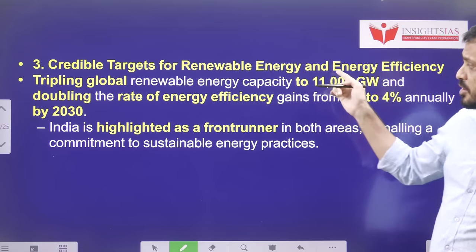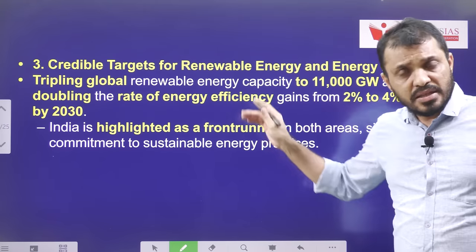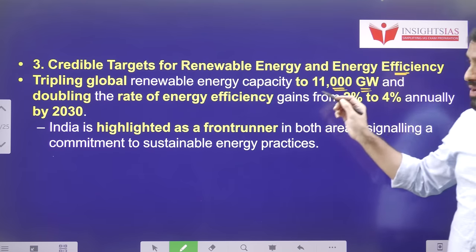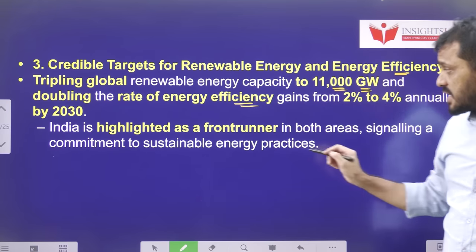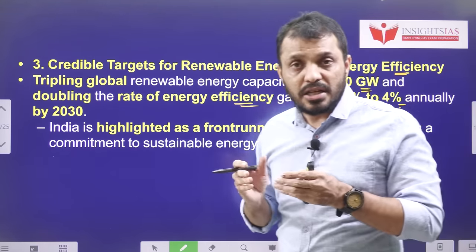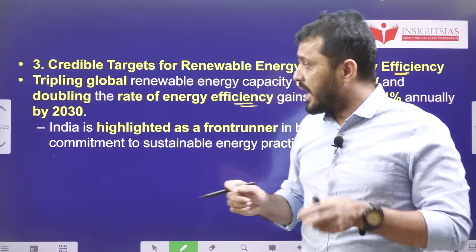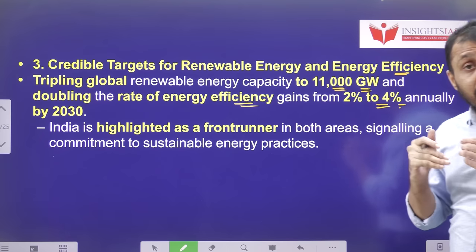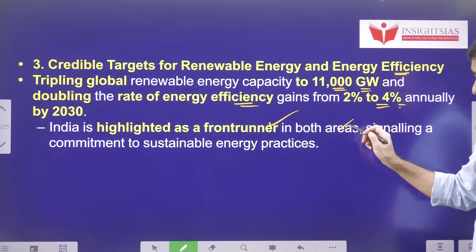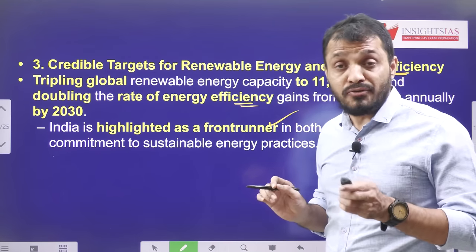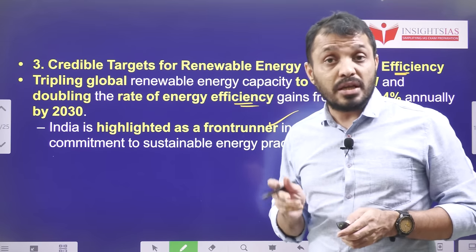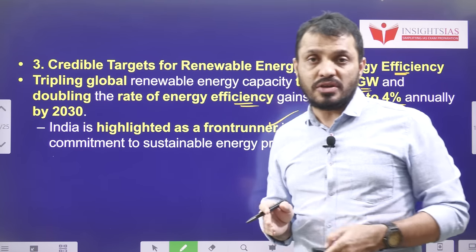The third highlight is a credible target for renewable energy and energy efficiency. COP28 clearly mentions tripling the renewable energy capacity to 11,000 gigawatts and doubling energy efficiency from 2% to 4% by 2030. Increasing energy efficiency means less energy is needed, and increasing renewable energy means less consumption of fossil fuels. This aspect highlighted India's contributions and recognized India as a frontrunner in encouraging renewable energy and improving energy efficiency across various sectors of the Indian economy.